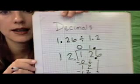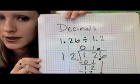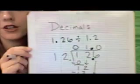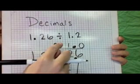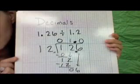I bring down the 6. 12 doesn't go into 6. So I have to put a 0 up here. So you notice I have three numbers inside of the box and I have three numbers on top of the box. That's important.